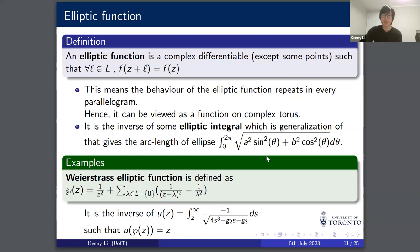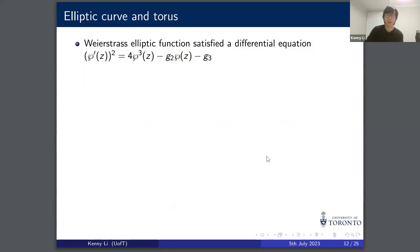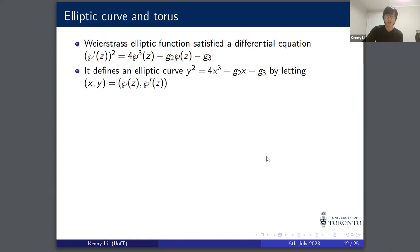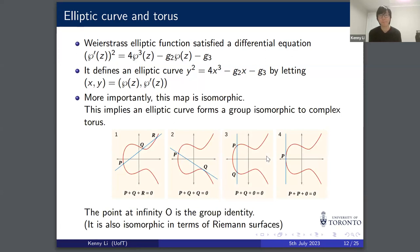The most important example in today's context is the Weierstrass elliptic function ℘, defined as a complicated series, and it is the inverse of the elliptic integral in a specific form. In complex analysis, we can show that the Weierstrass elliptic function satisfies a differential equation, and when we substitute x = ℘(z) and y = ℘'(z), it defines an elliptic curve. More importantly, this map is an isomorphism — if you know group theory, it is a group isomorphism preserving the group operation.